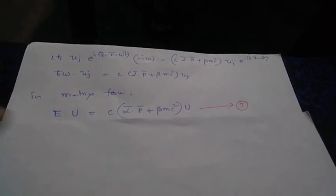On the right-hand side we have the expression as it is. Cancelling the exponential factors on both sides, we are left with ℏω times u_j equals the right-hand side factor. Since ℏω is also written as the energy E of the particle, we write E in place of that. Writing this out for all four values of j, we can combine them into a single equation involving the u column matrix.